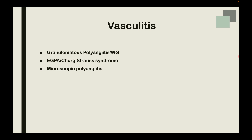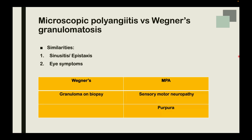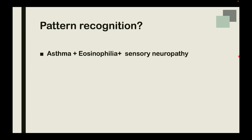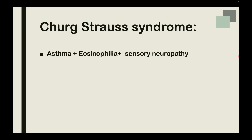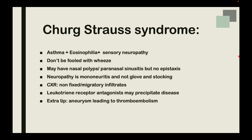The next important topic is vasculitis. Expect questions on granulomatous polyangiitis, EGPA, and microscopic polyangiitis. Question stems will give you many confounding features — for example, sinusitis, epistaxis, and eye symptoms can be found in both granulomatous polyangiitis and microscopic polyangiitis. Look out for differentiating features: a pattern of asthma, eosinophilia, and sensory neuropathy points towards Churg-Strauss syndrome. But don't be fooled by wheeze alone — wheeze can occur in many conditions, and automatically assuming asthma will lead to the wrong diagnosis. Each of these points can feature as an MCQ in your MRCP exam.